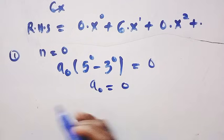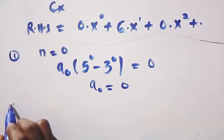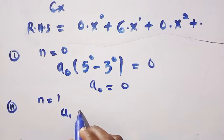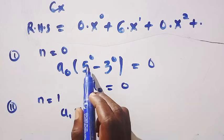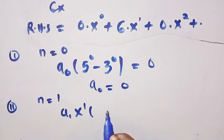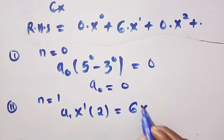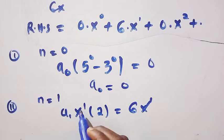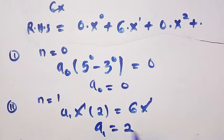Also, checking when n equals 1: we get a_1 times x^1 times (5^1 minus 3^1). This gives a_1 times x times 2, and this must equal 6x. Cancelling x from both sides, we get a_1 times 2 equals 6, so a_1 equals 3.